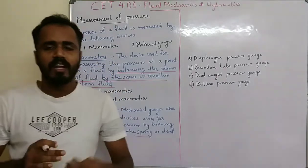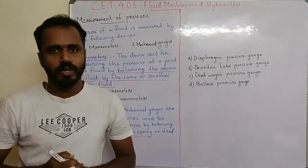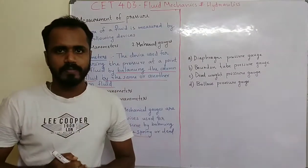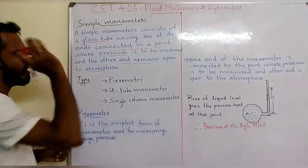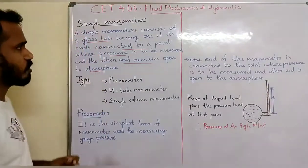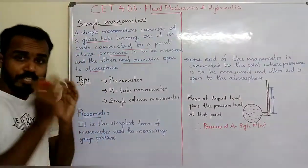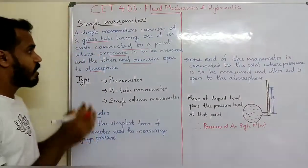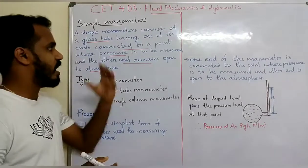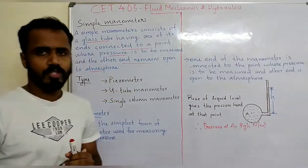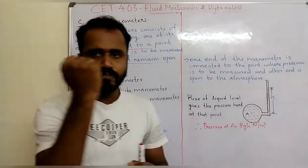Now we discuss manometers in detail. Simple manometers consist of a glass tube having one of its ends connected to a point where the pressure is to be measured, and the other end remains open to the atmosphere.